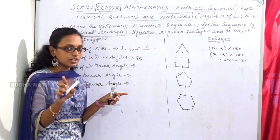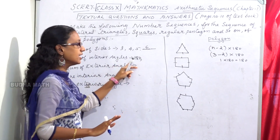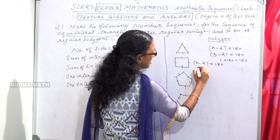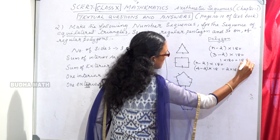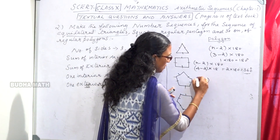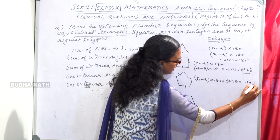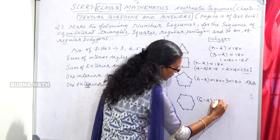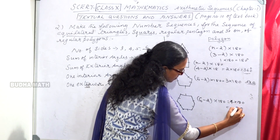Triangle, square, pentagon, hexagon — this is the sequence. For the square with 4 sides: (4-2) into 180 = 2 into 180 = 360 degrees. Pentagon: (5-2) into 180 = 3 into 180 = 540 degrees. Hexagon: (6-2) into 180 = 4 into 180 = 720 degrees.